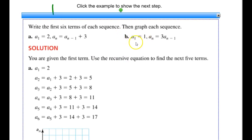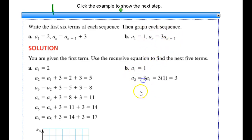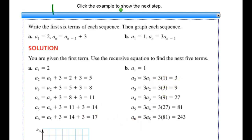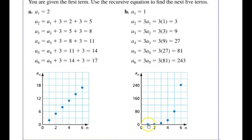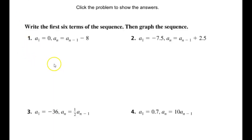Now part B: again, I'm told my first term and I'm given my formula. I see I'm multiplying, not adding or subtracting, so I know this is a geometric sequence. I know my first term and I plug it into my equation to find the next terms. Multiplying each time means my numbers get very large very quickly. I graph the discrete values without connecting lines, but if I did connect them they would form an exponential function. Go ahead and try the monitoring progress problems.